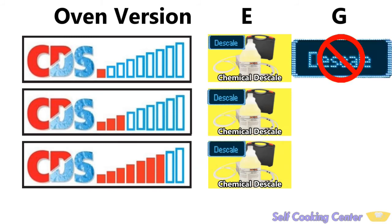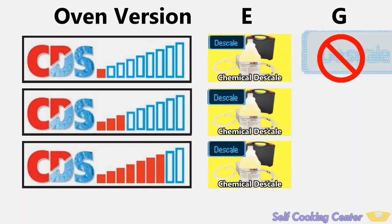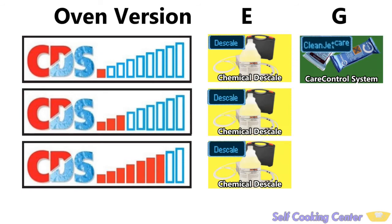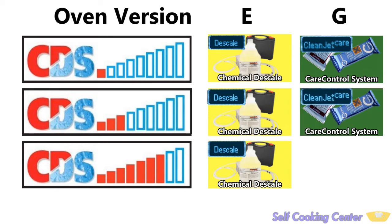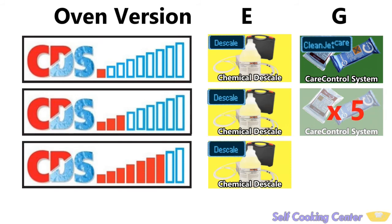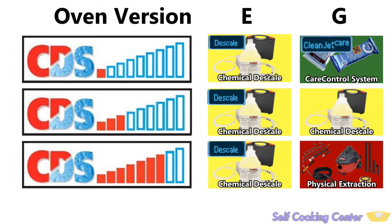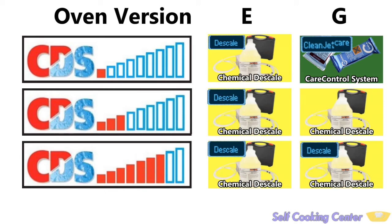For the version G oven at one bar, it doesn't provide the automatic descale program — the care control system is intended to knock the scale back. When done often enough, scale will be kept to a minimum. If it reaches three bars, evidently that hasn't been happening. You can still run the oven through care control cycles, but it would take many four-hour evolutions to put a dent in the scale formation. A manual chemical descaling is probably the best approach at this point — the automatic descale program still isn't available. At seven bars, there will be a significant amount of loose scale and it should first be physically scraped out. Although the automatic descale button is now present, it may have to be done more than once to get the generator back to a pristine condition.